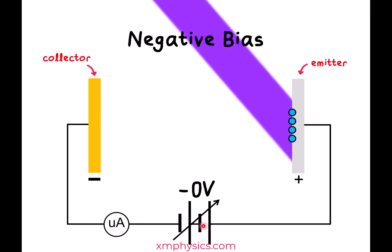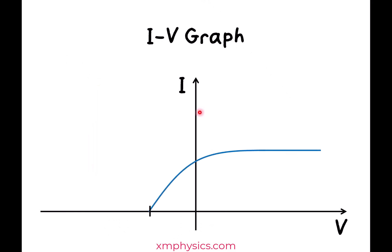A typical experiment will involve us changing the biasing voltages and recording the photoelectric current at every biasing voltage. The results of such an experiment are typically presented in an IV graph, and this is how a typical IV graph looks like.